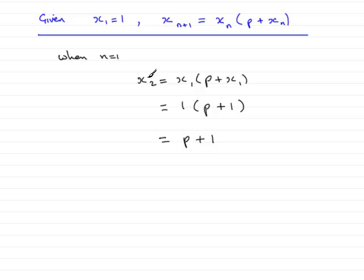So x2, the second term in the sequence, is p + 1. That brings us to the end of this part of the question.